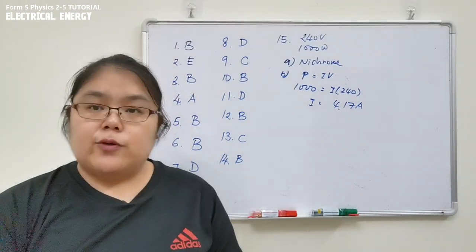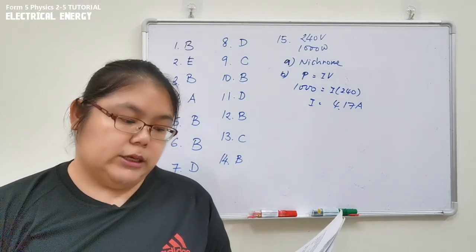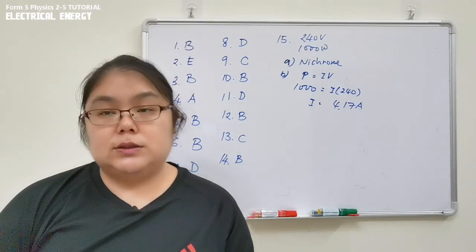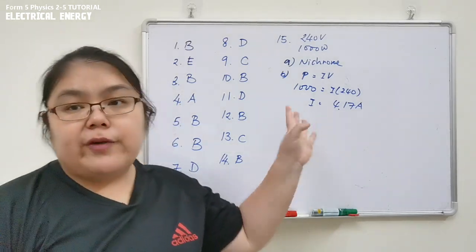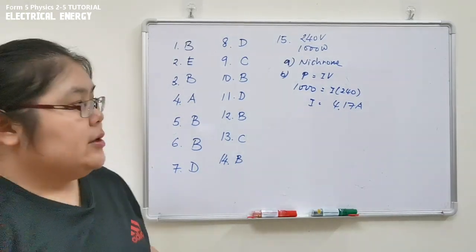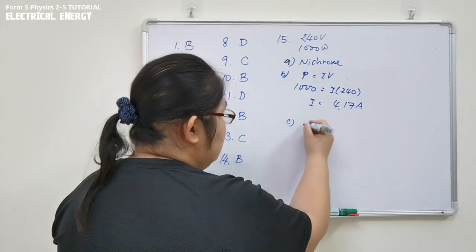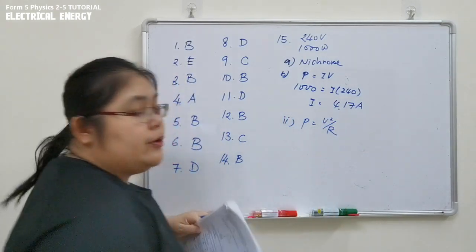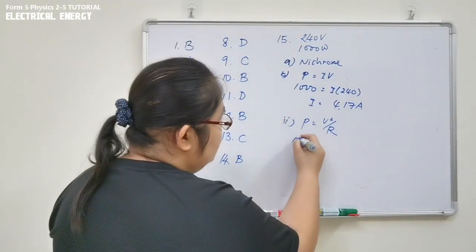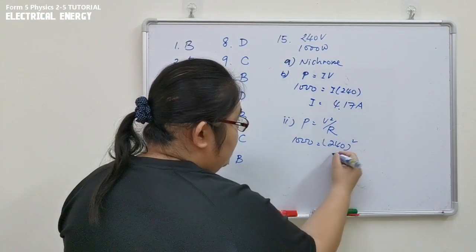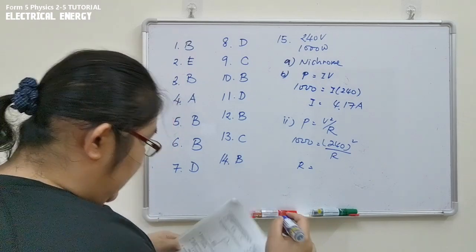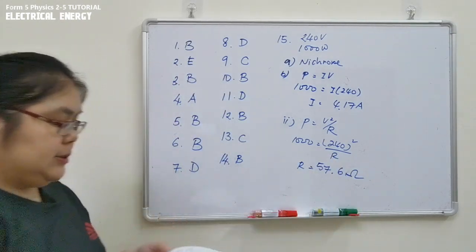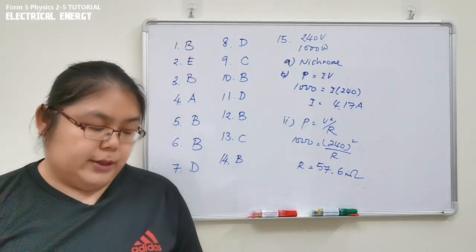For part (c), we need to find the resistance of the heating element. We use the formula P = V²/R. Substituting: 1000 = (240)² / R, which gives R = 57.6 ohms. That is the resistance of the heating element.